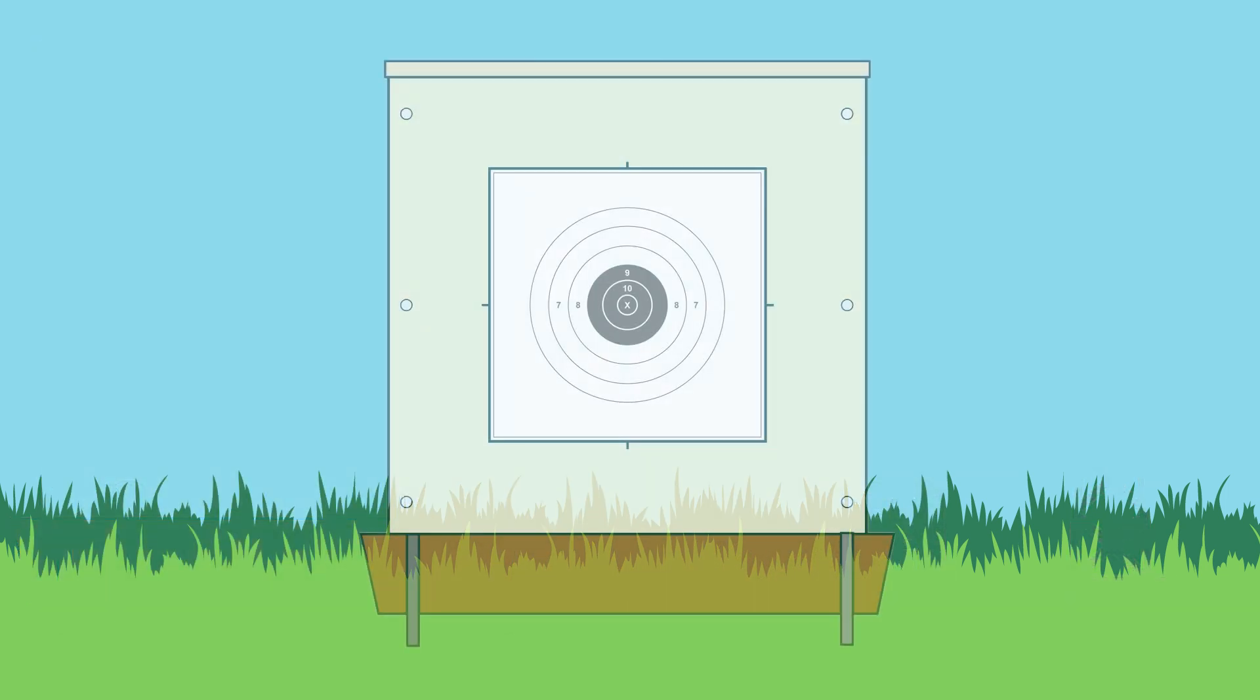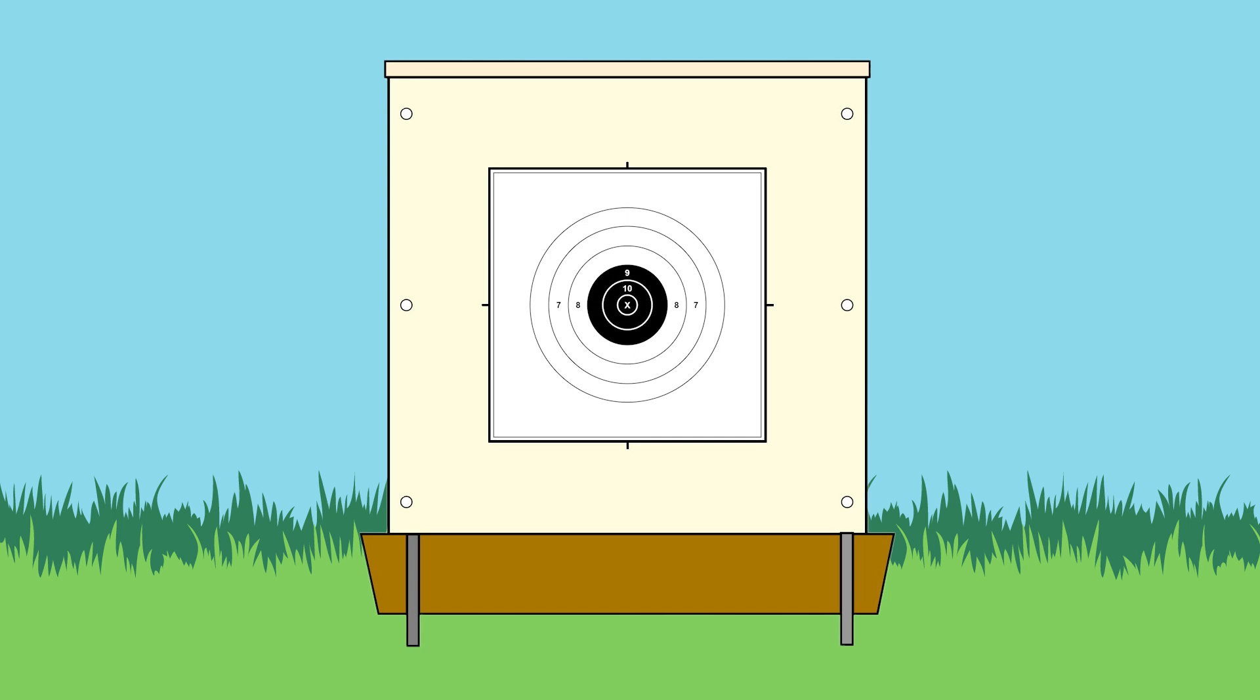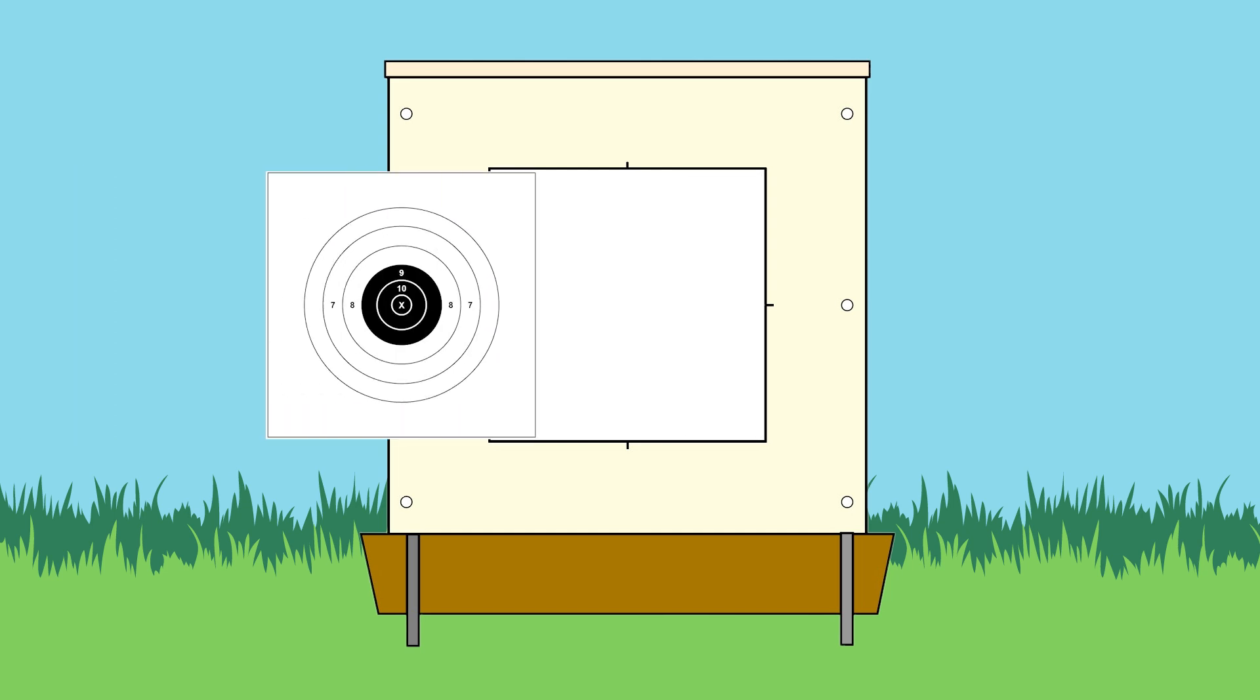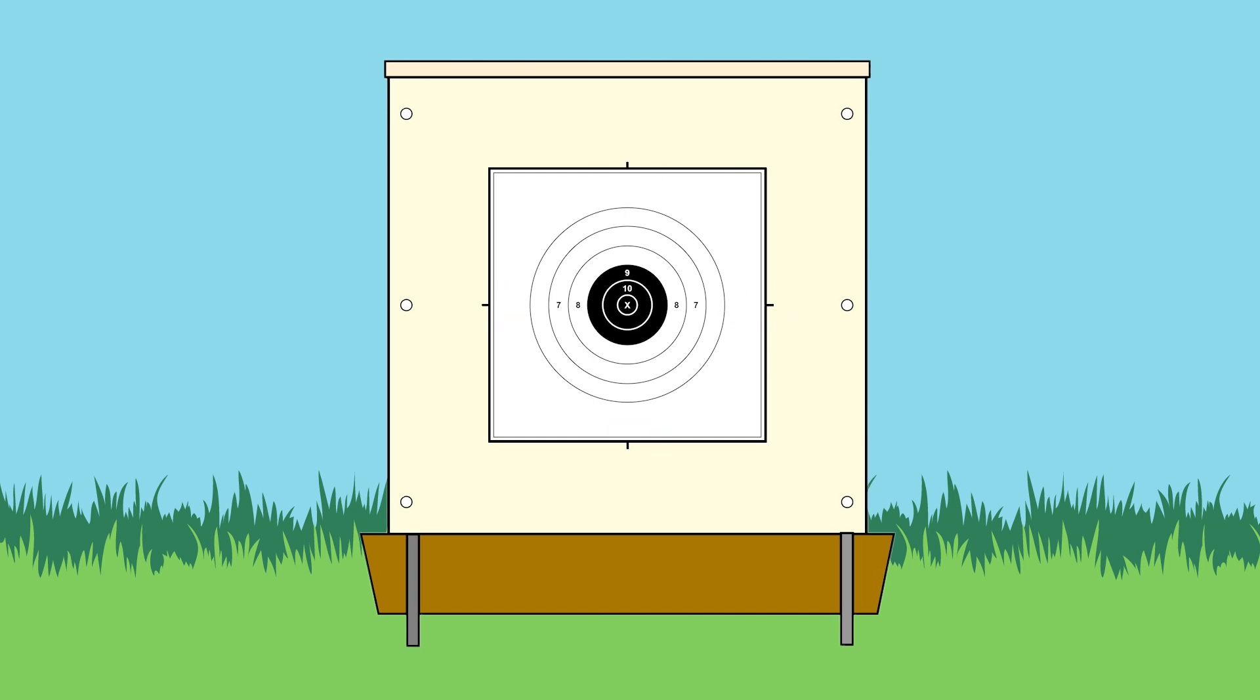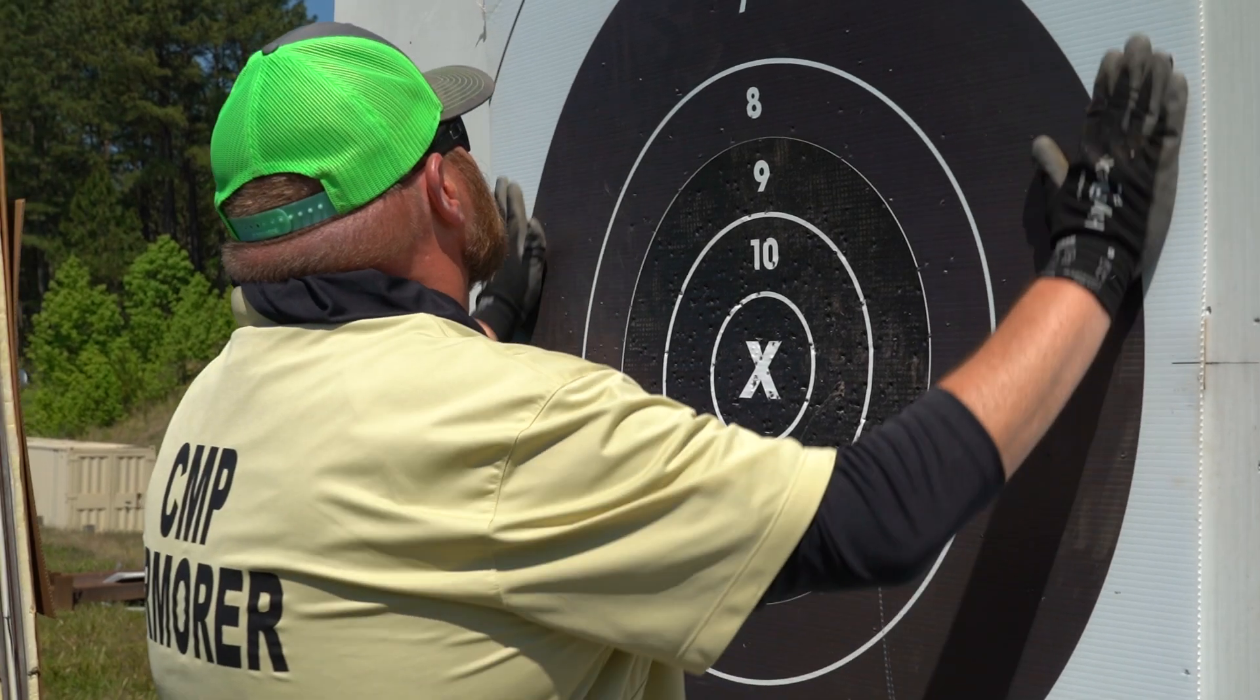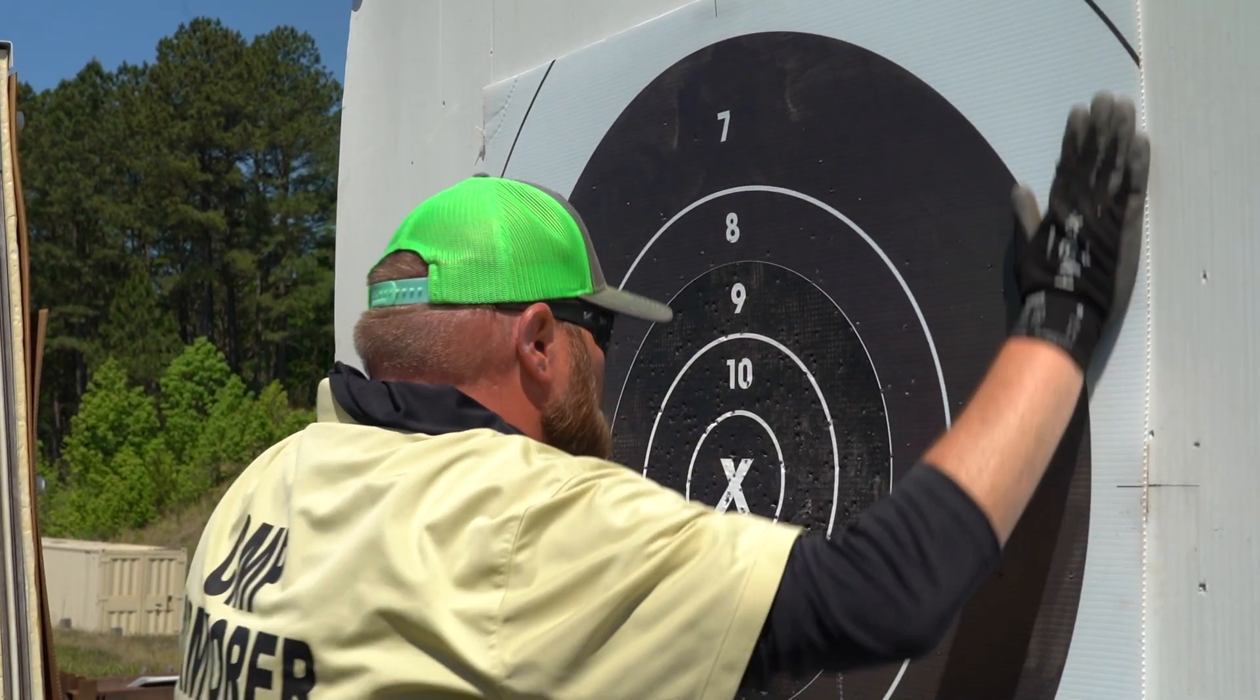Each one of these targets we put a new face on depending on the yard line that we're at. So this is the 200 yard center. When we change this we pull these off and we would replace it with another one. When we replace them we use these hash marks to make sure that the target is completely centered within the center of the external frame.